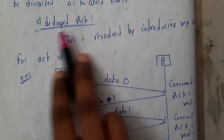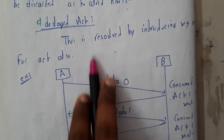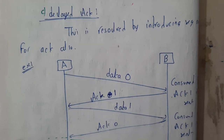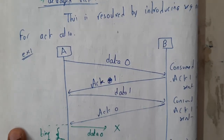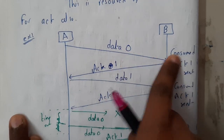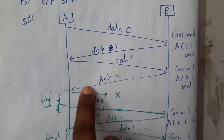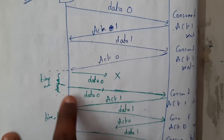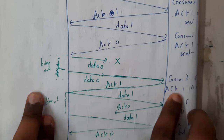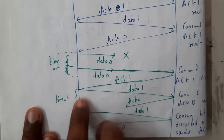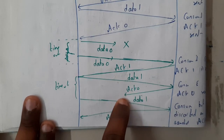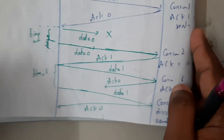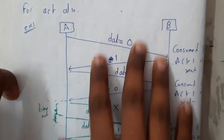For delayed acknowledgement, we also give numbers to acknowledgements. Sender A sends data zero and receives acknowledgement one, then sends data one and receives acknowledgement zero. If data is lost, after a timeout the sender resends it and eventually gets acknowledgement one. If the acknowledgement is lost, the sender resends the data and gets the acknowledgement again. In this way the sequence-numbered acknowledgements keep the process on track.